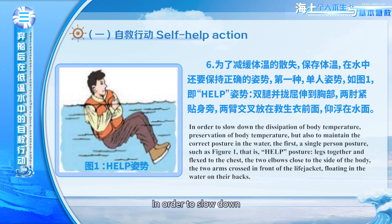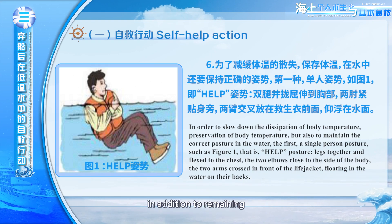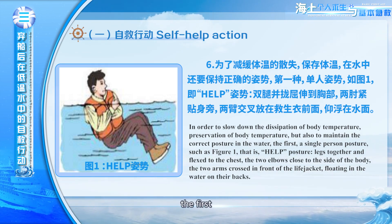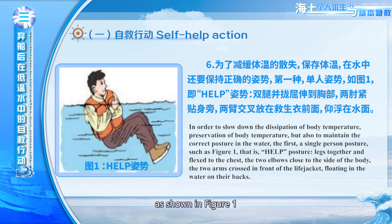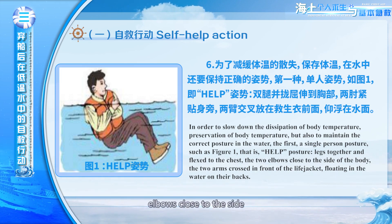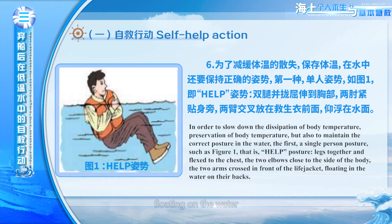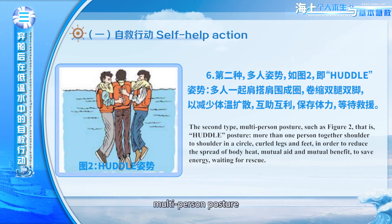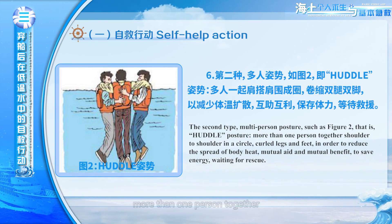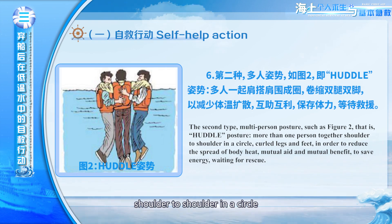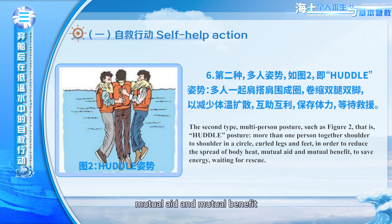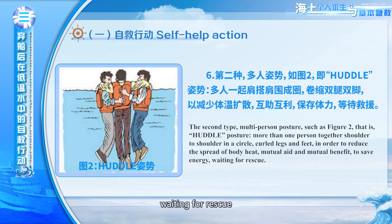Six: In order to slow down the loss of body temperature, in addition to remaining still in the water, maintain the correct posture. The first is the single position — the HELP position (as shown in figure one): legs together and drawn to the chest, elbows close to the sides, arms crossed in front of the life jacket, floating on the water. The second type is the multi-person huddle posture (figure two): more than one person together shoulder to shoulder in a circle, with curved legs and feet, in order to reduce the spread of body heat, providing mutual aid and saving energy while waiting for rescue.